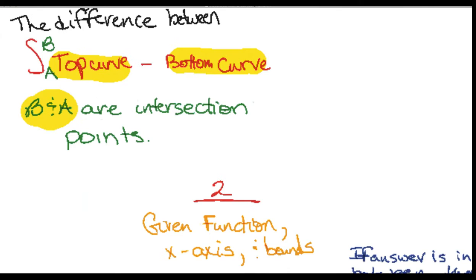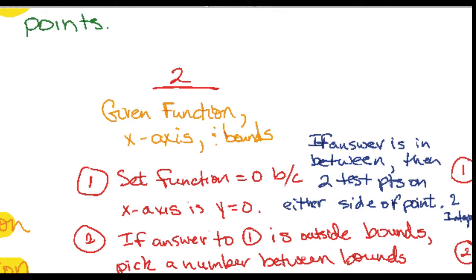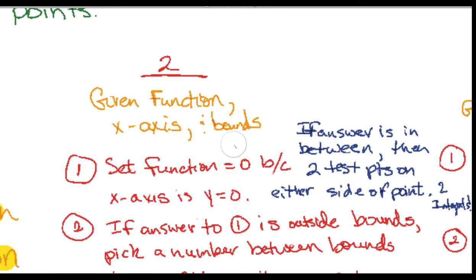All right, let's look at scenario number two. In scenario number two you are given a function in the x-axis and bounds. So what you do in that scenario is you've got to make sure that your function itself doesn't go below the x-axis at any point, so we set it equal to zero and we solve that. The reason why is because the x-axis is the function y equals zero. So what we're doing there is finding if there are any intersection points between these two bounds.